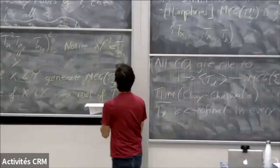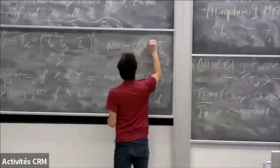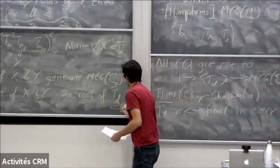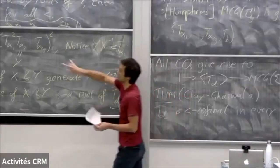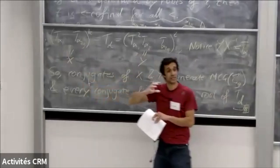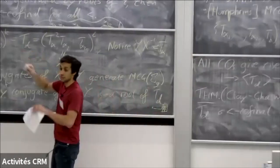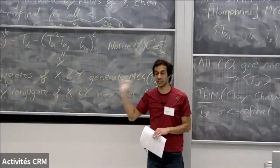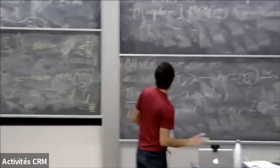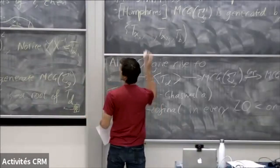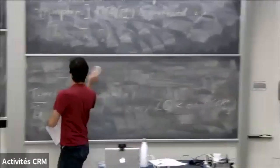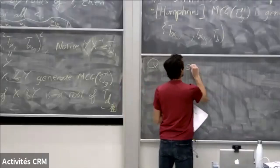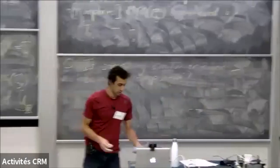That's the heart of the main theorem. You can run this argument — there are similar relations when you have two boundary components, and you can actually get the theorem that a product of both Dehn twists around the boundary components is co-final in every left ordering of the mapping class group. Here's an open question: is something similar true for more than one boundary component?